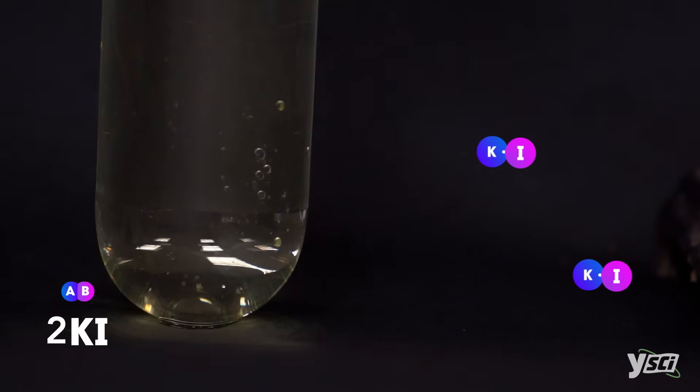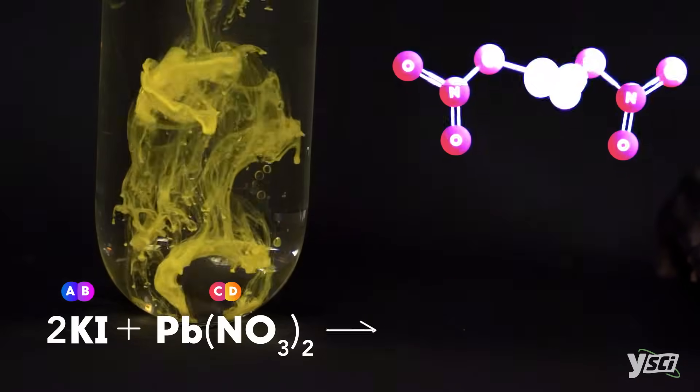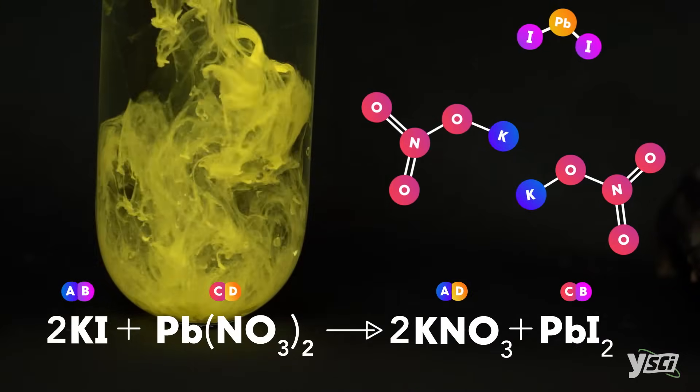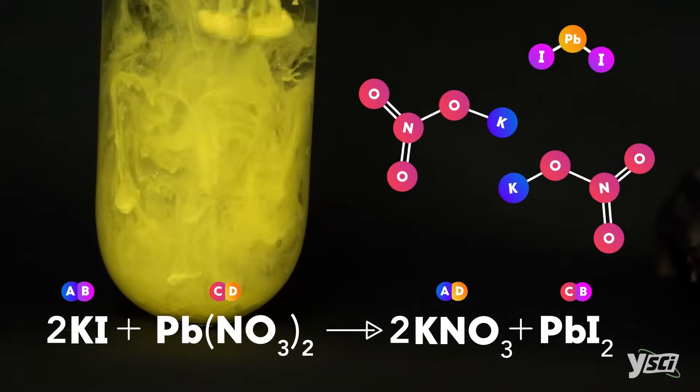When potassium iodide is added to lead 2 nitrate, the potassium and lead swap places. You can observe the yellow lead 2 iodide precipitating from the potassium nitrate.